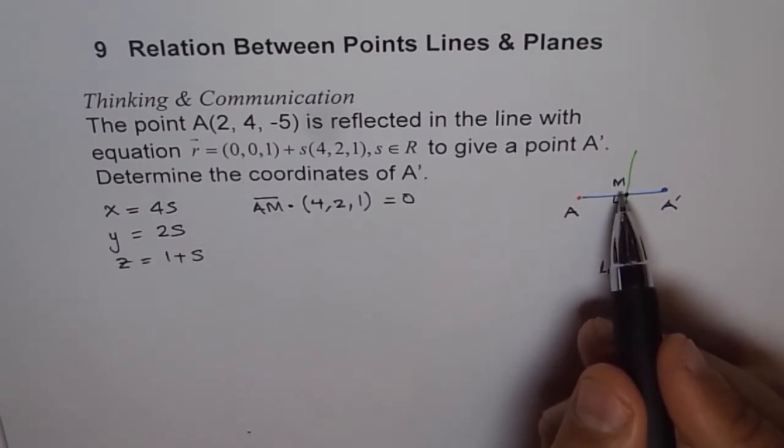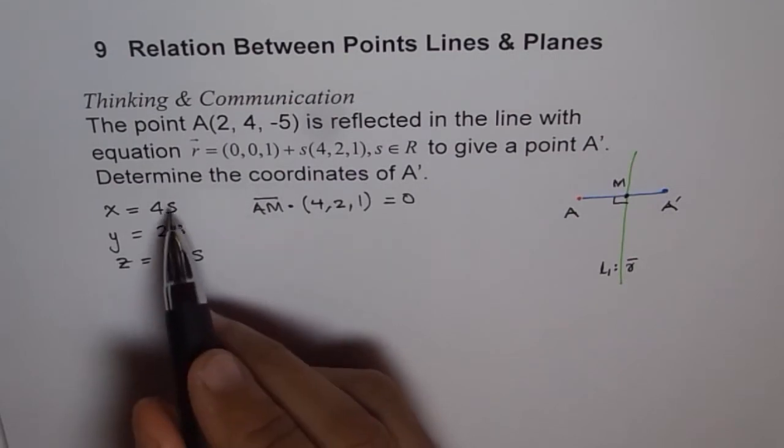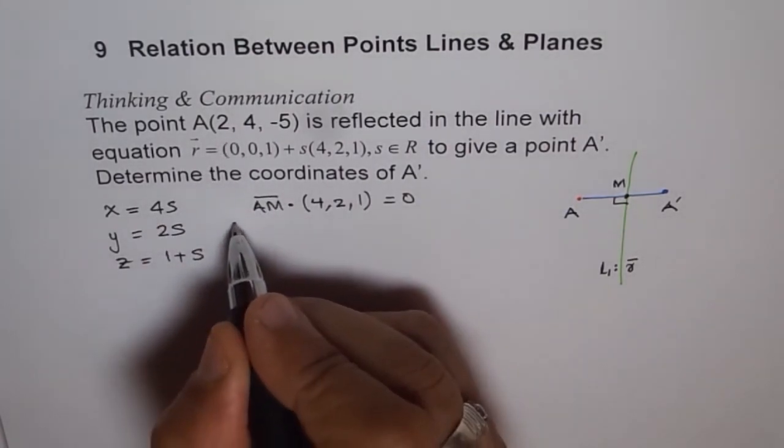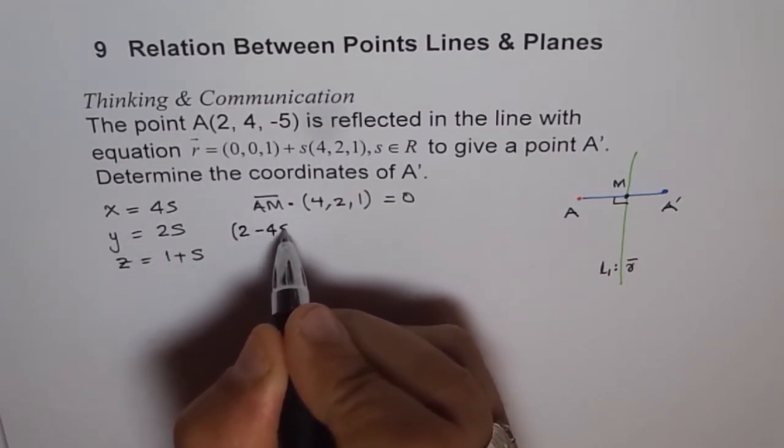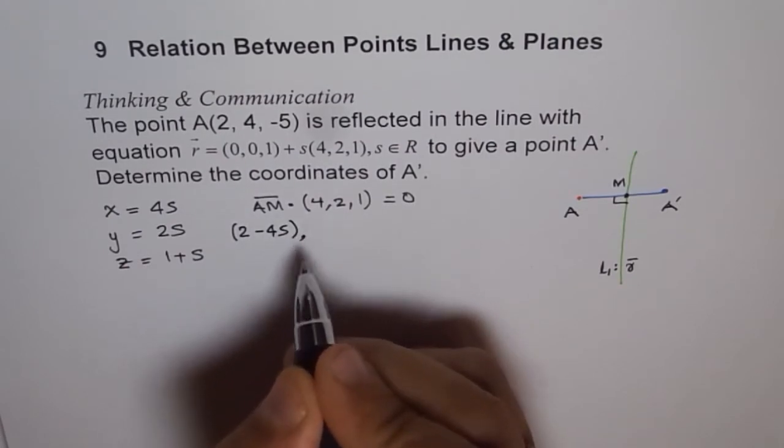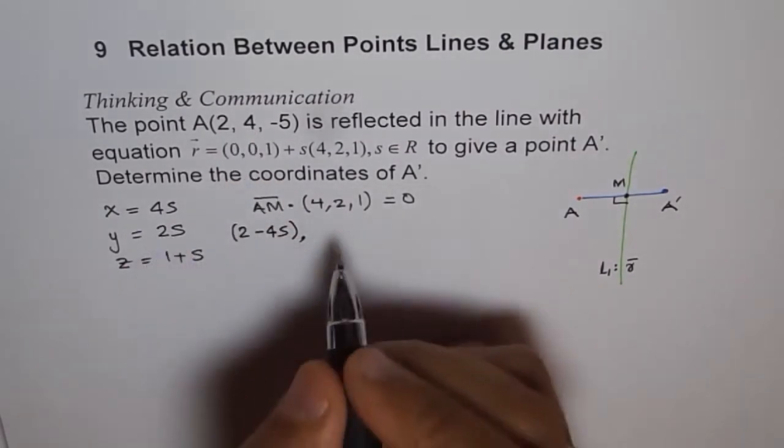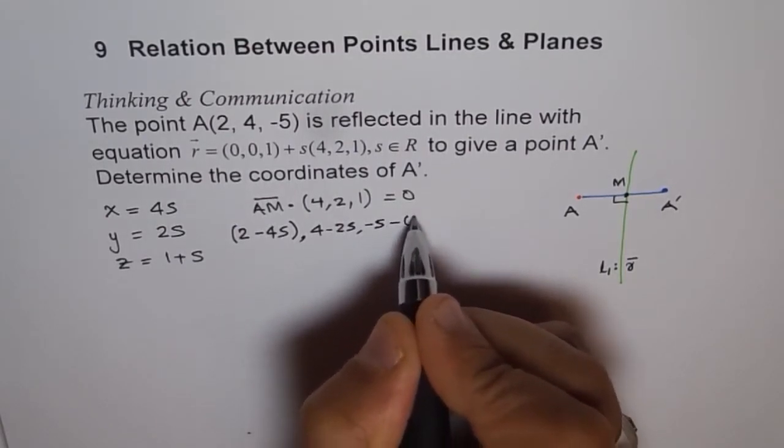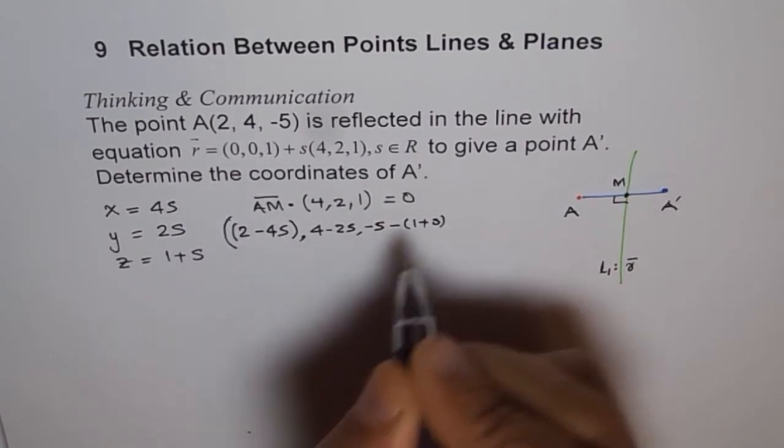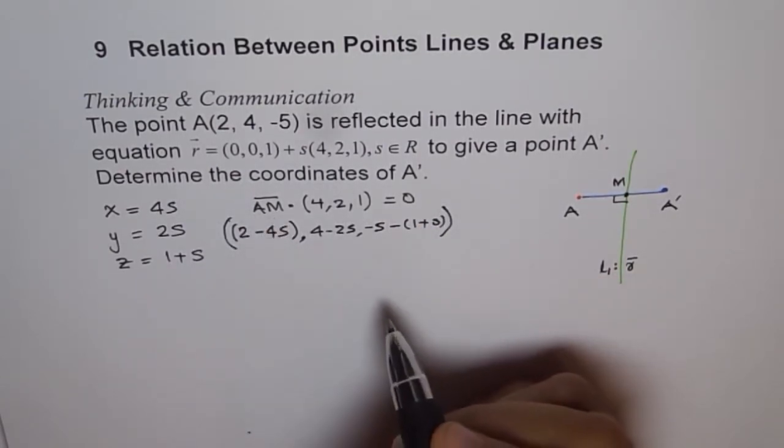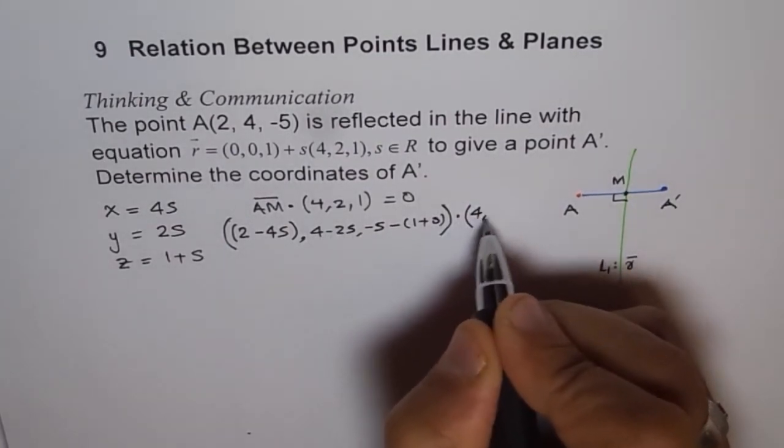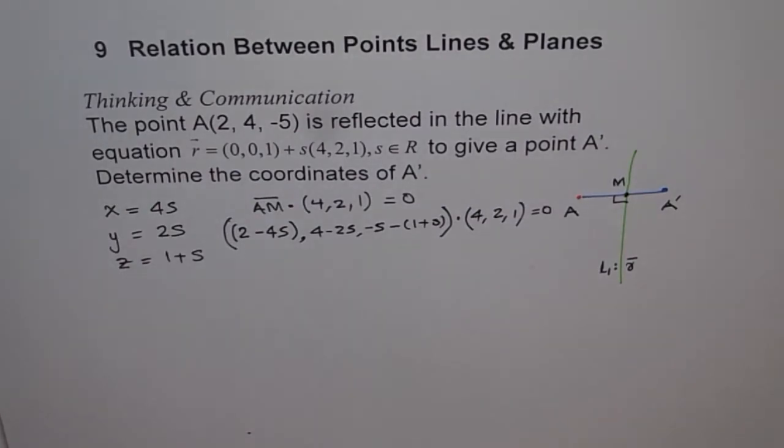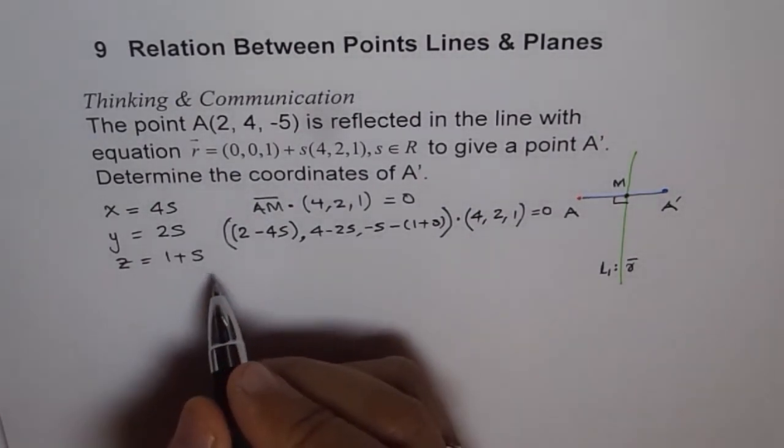So this is the concept which we are going to explore now. And what is A to M? We don't know what M is, it could be any point. So we'll use this general point. So we say, well, this is my general point. And A is (2, 4, -5). So I'll write this as 2 minus this, so we get (2 - 4S). That is my X value of the point. And the Y value is 4 - 2S. And the Z value is -5 - (1 + S). So that is this AM dot (4, 2, 1), which should be 0. So we have one variable less, and the equation here, we should be in a position to solve it.